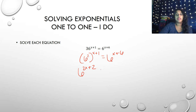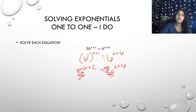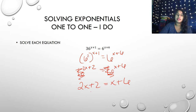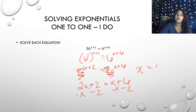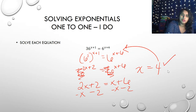Now I have a one-to-one. I can cross out the matching bases and I'm left with 2x + 2 = x + 6. From here it's a simple solve — subtract x from both sides to get all x's to one side, and I'm left with x = 4. When I plug that in with my calculator, I get a true statement. So this is not an extraneous solution — it is the solution.